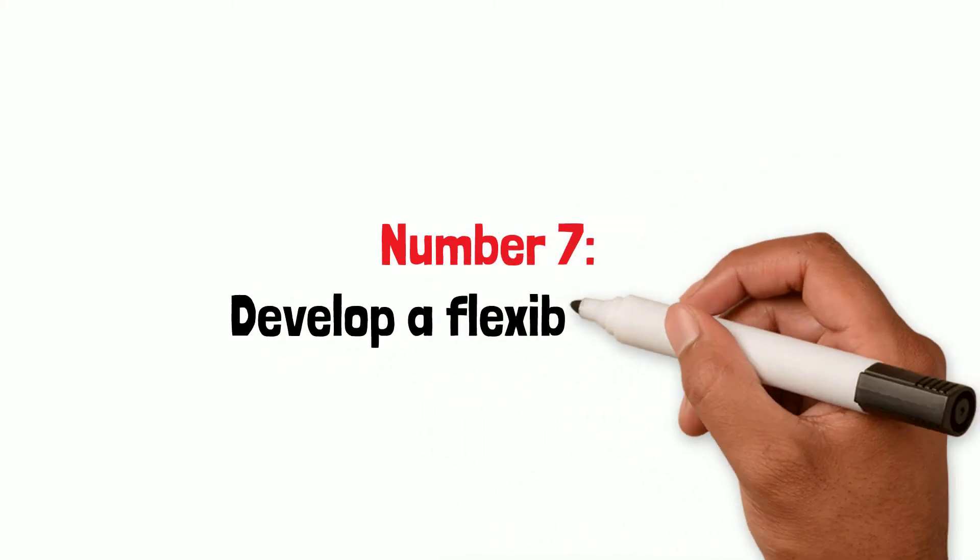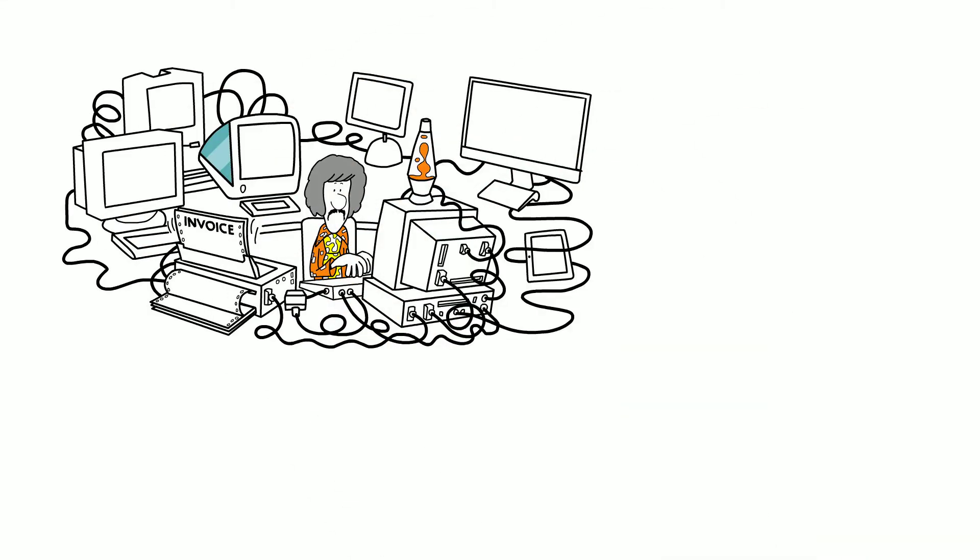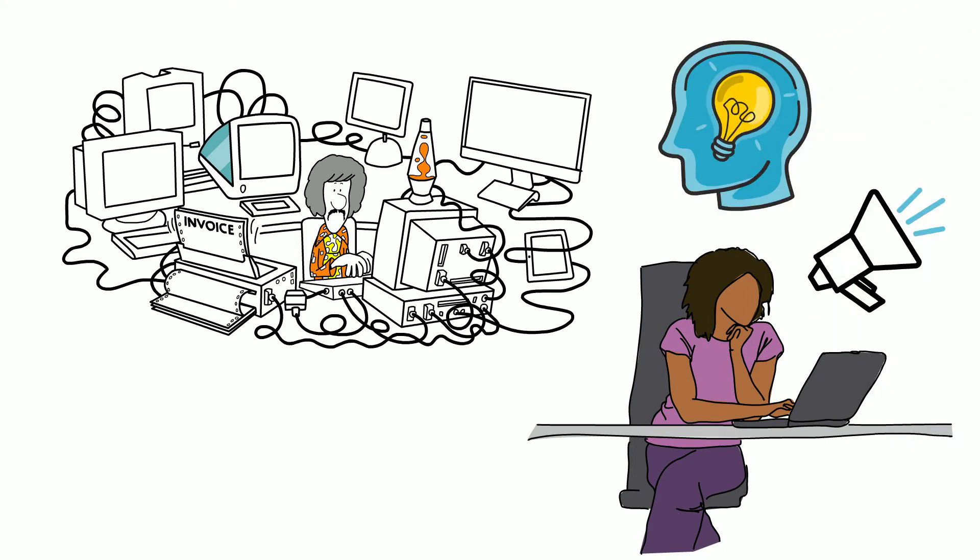Number seven: develop a flexible mind. In an ever-expanding and advancing technological world, keeping your ear to the ground and staying up to date with what is going on around you is key to unlocking your brain's potential.